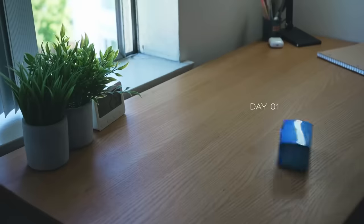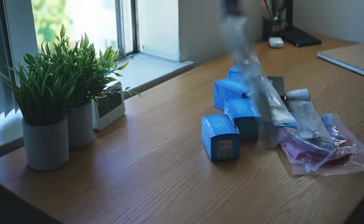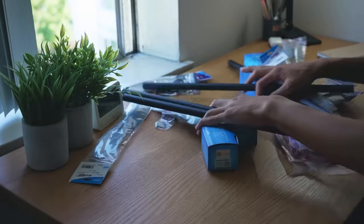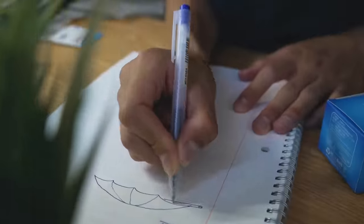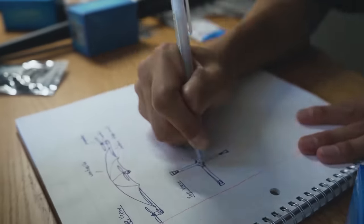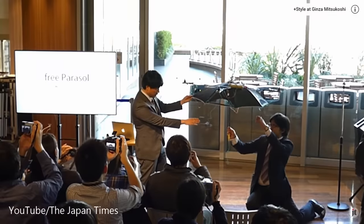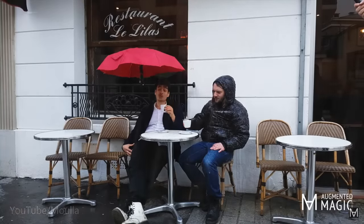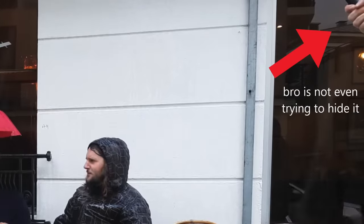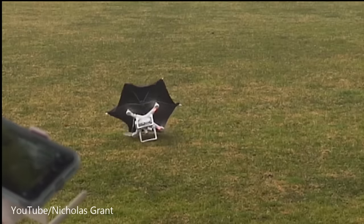In theory, this project should be pretty simple. I reckon I can just slap some propellers onto an umbrella so it flies like a drone. But often, theory can only take you so far. Turns out people have tried similar projects in the past, but all of them are either fake or just don't really seem to work.